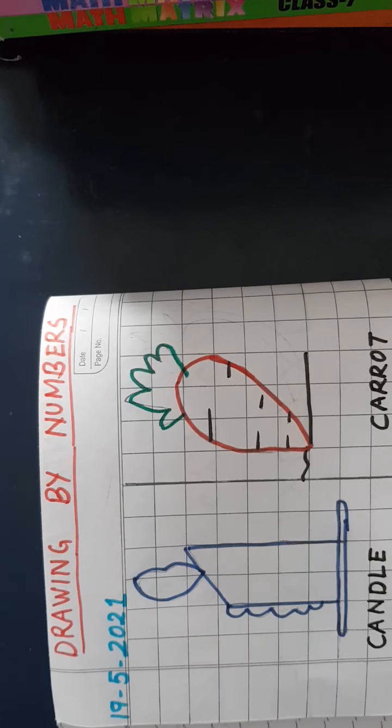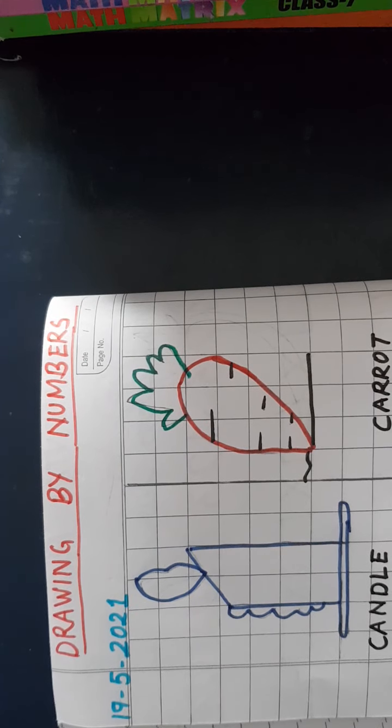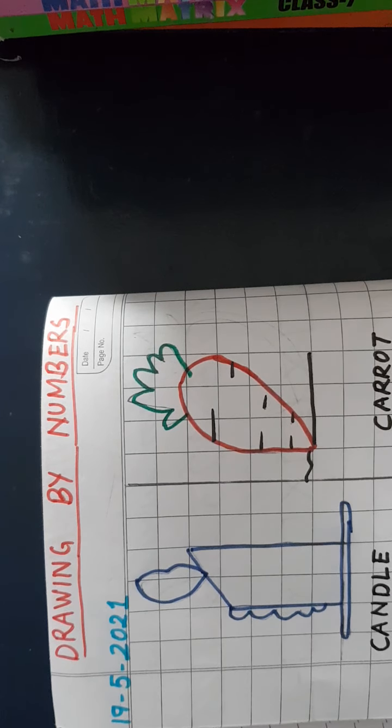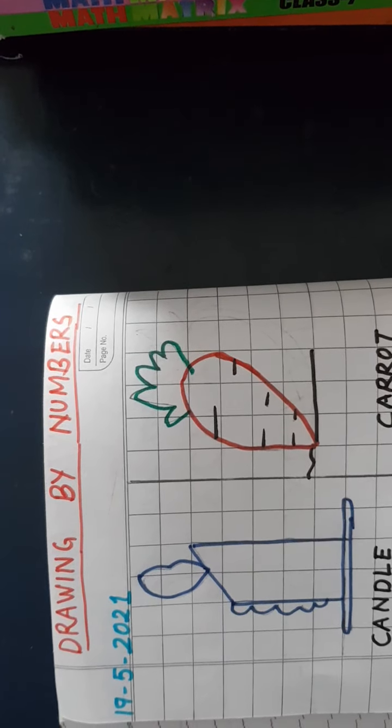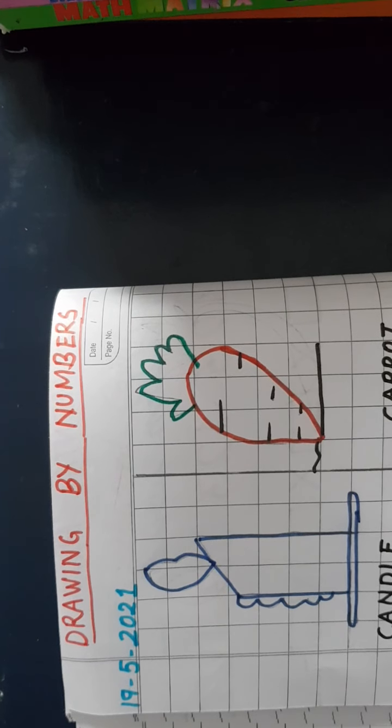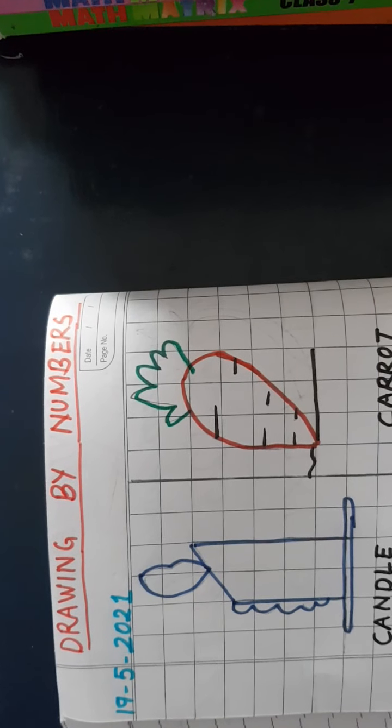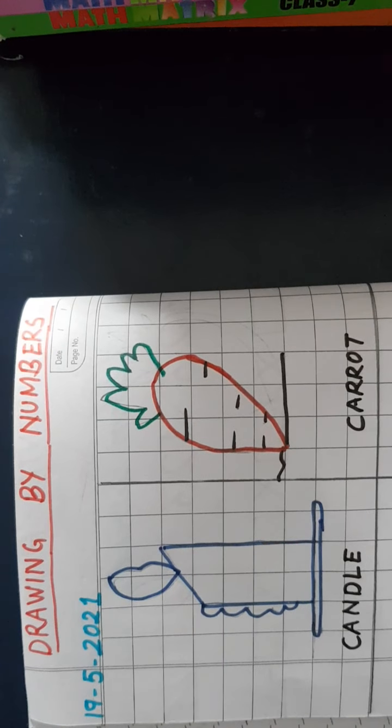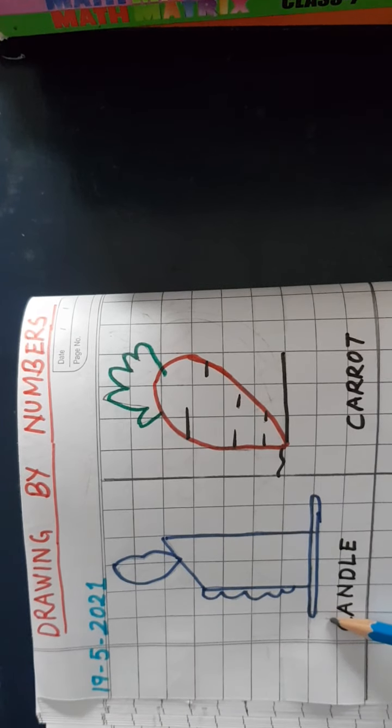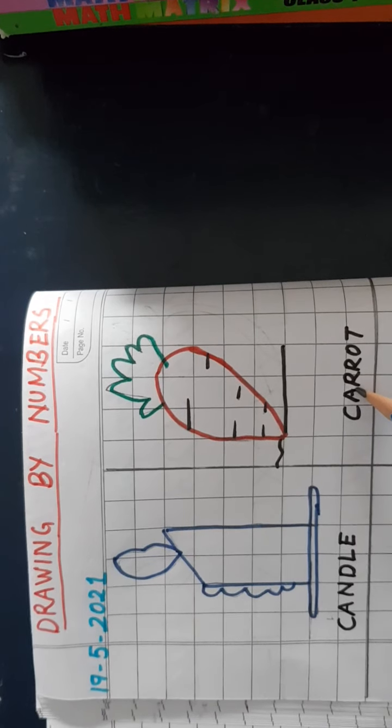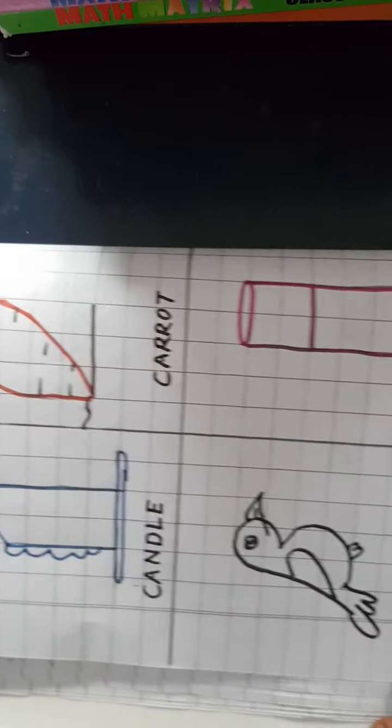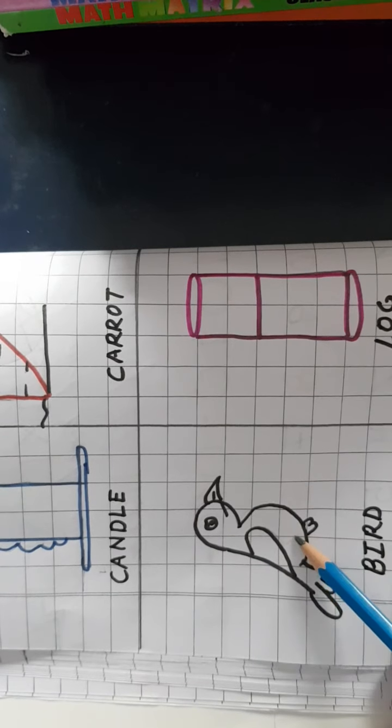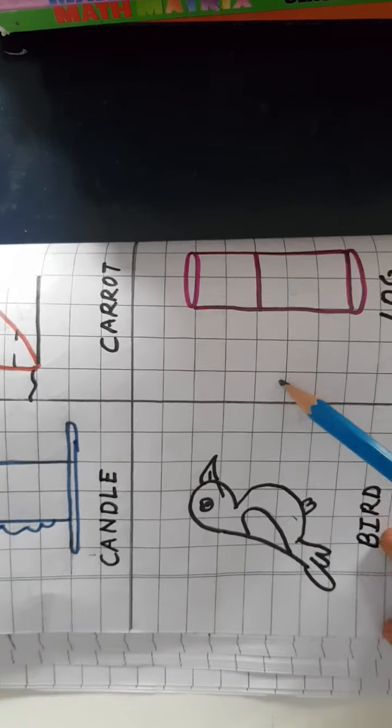So today, as the title shows, Drawing by Numbers, I am going to teach you how to draw different pictures and color them by the numbers 1 to 4. As you can see, this is a candle, this is a picture of the carrot, this is bird and this is log.